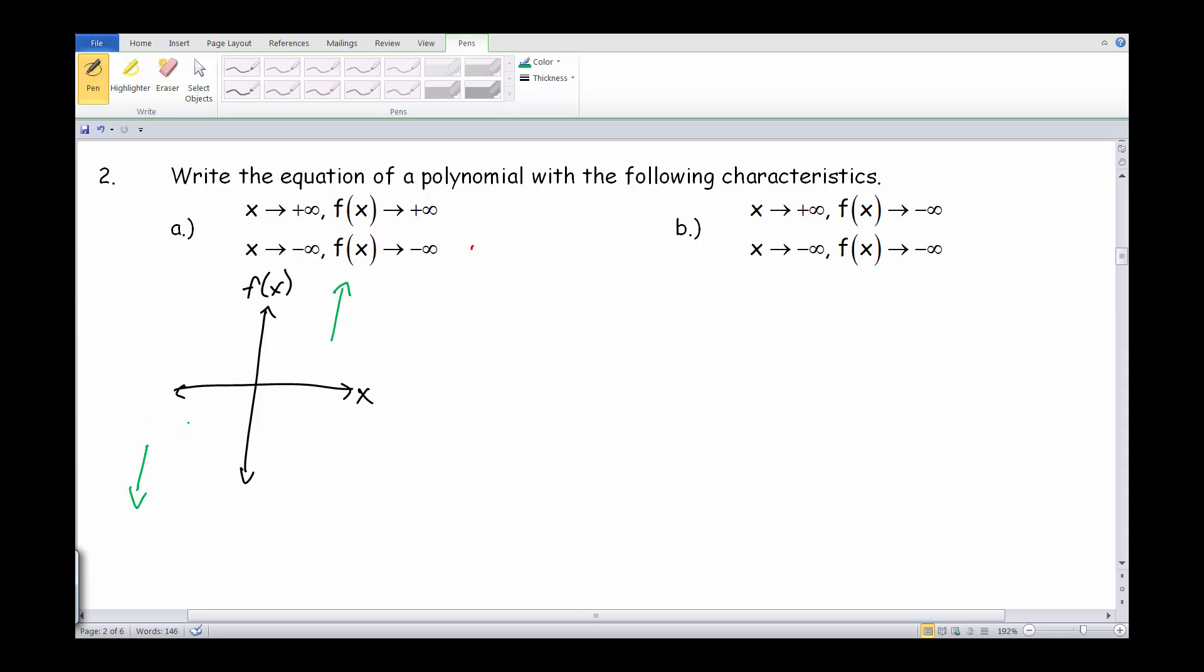And so right now, just looking at our end behaviors, we see that we're ending up in kind of that s shape where both sides are going in opposite directions. So we would see maybe some polynomial doing something like this.